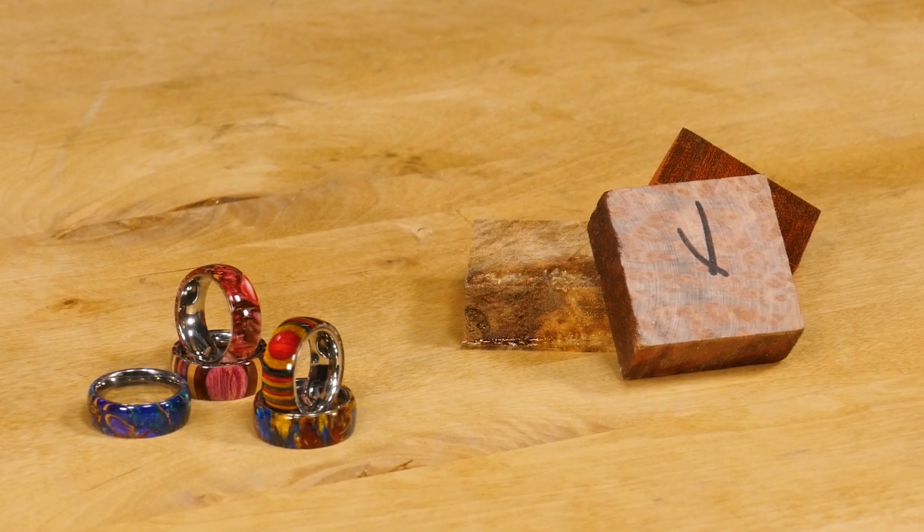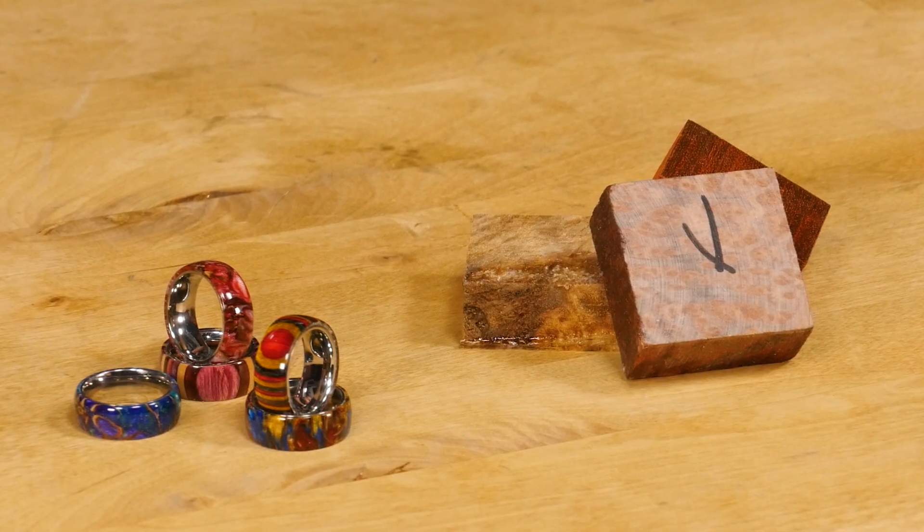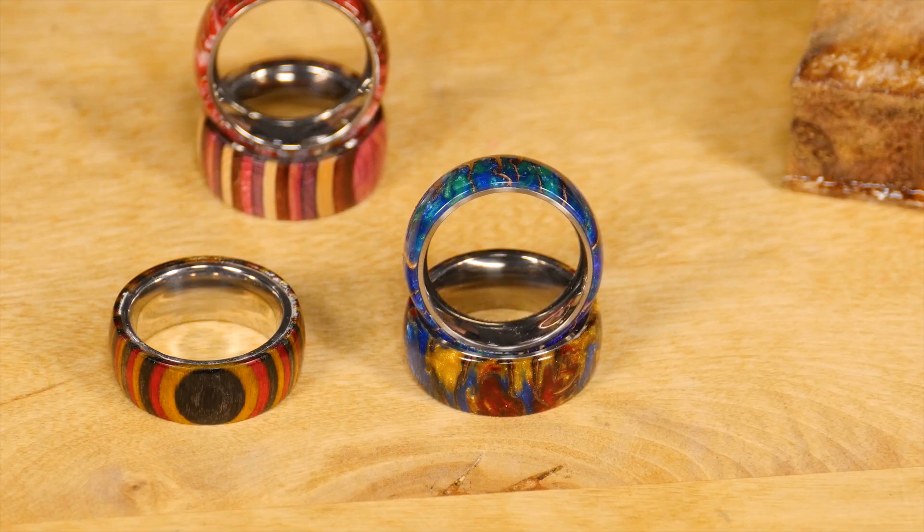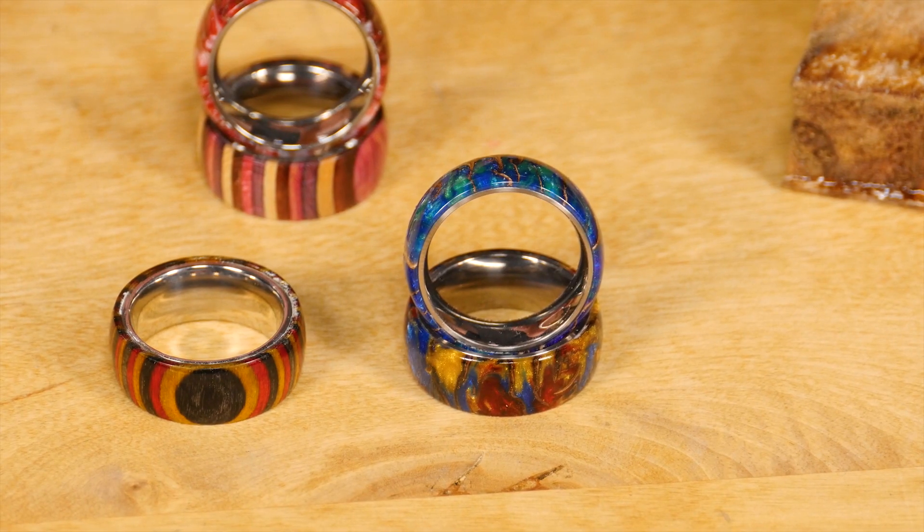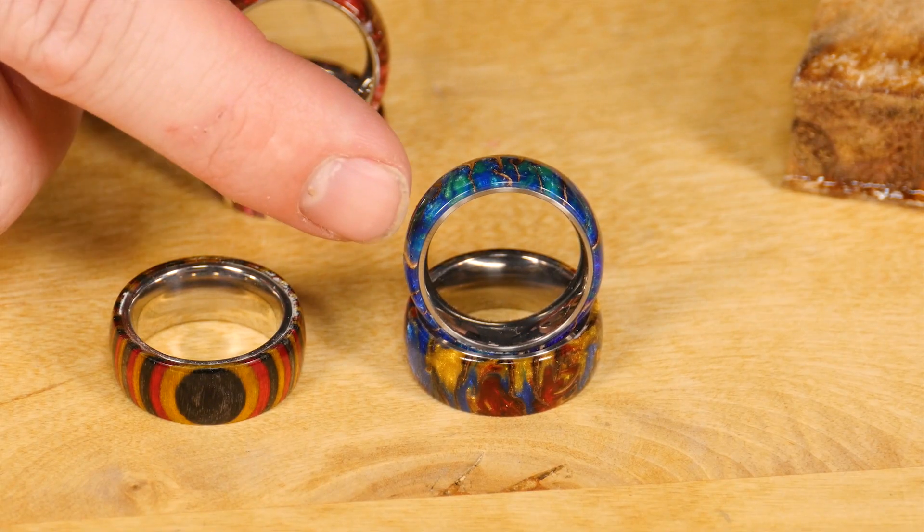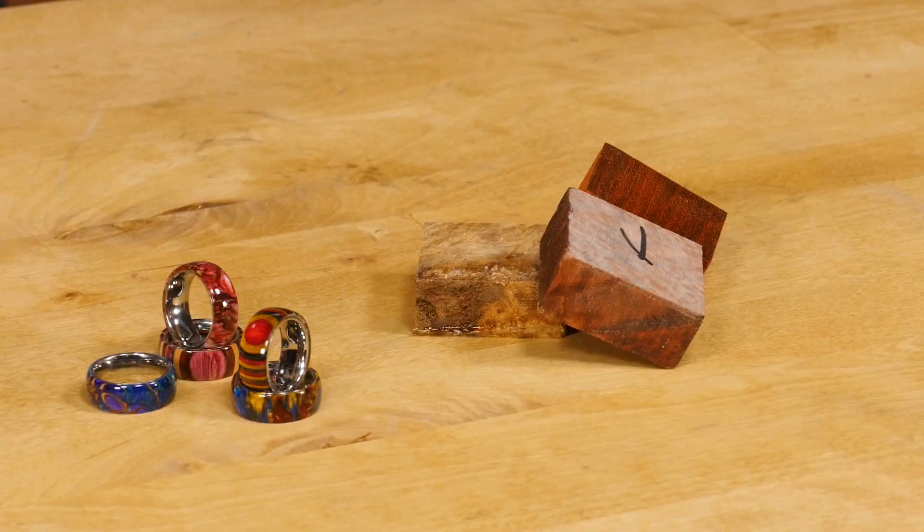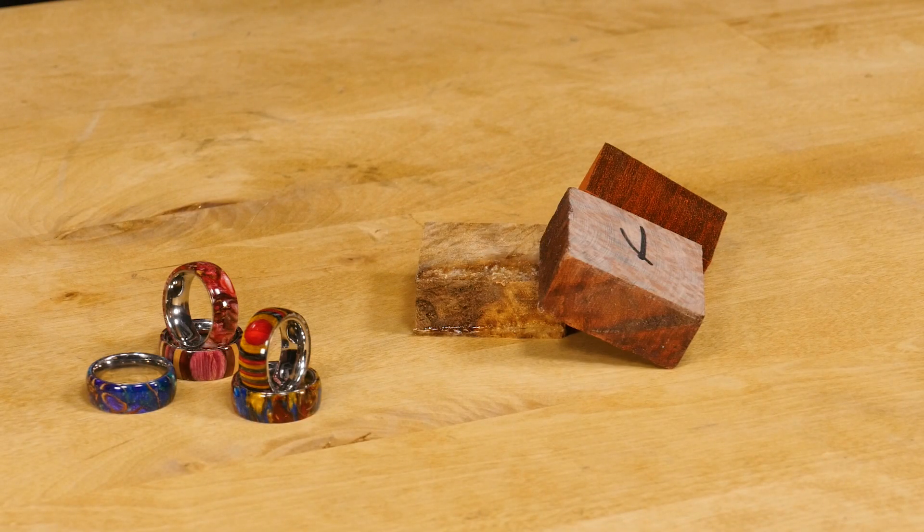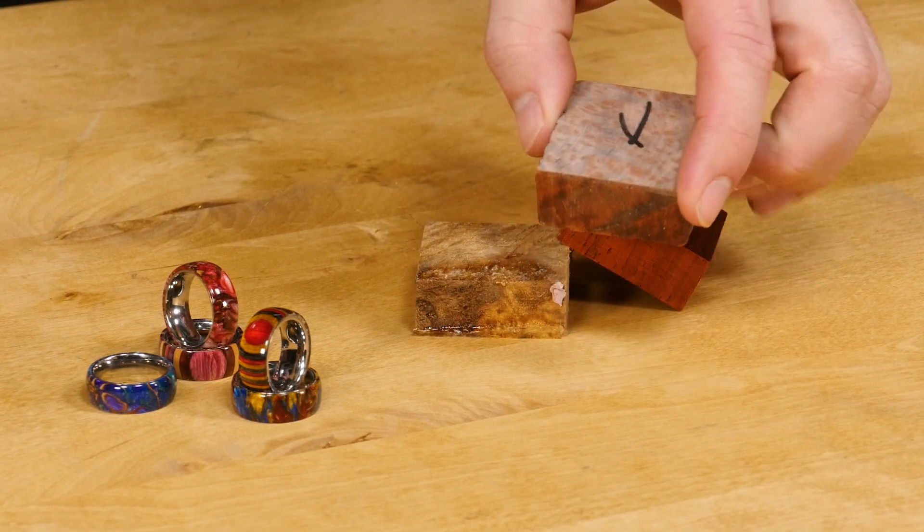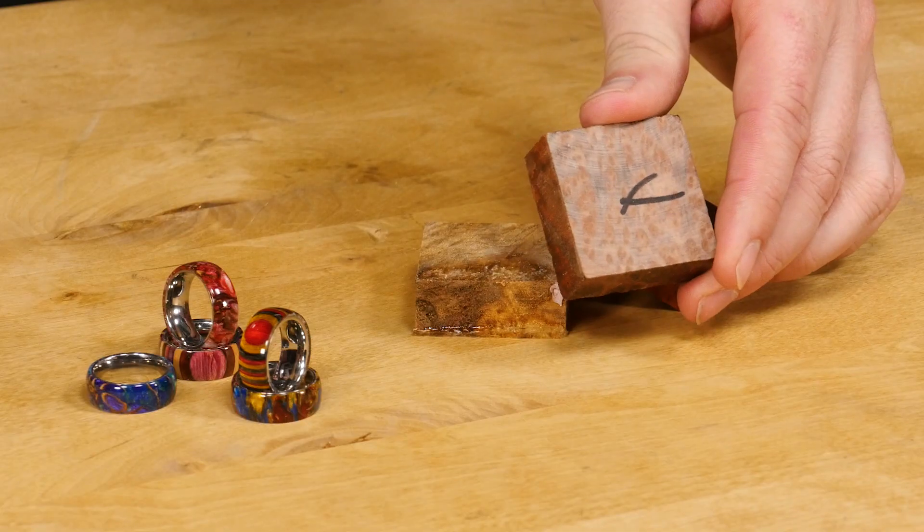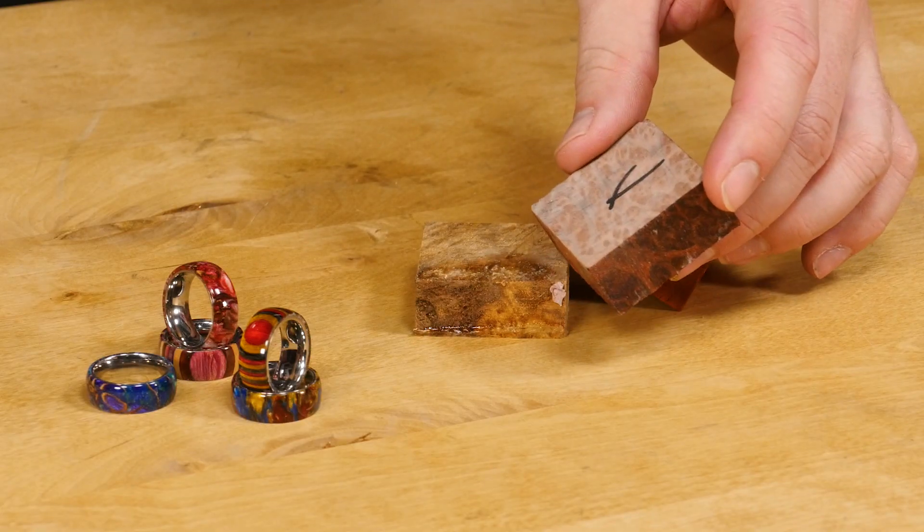Let's get started by choosing a blank that is one-sixteenth wider than our ring core. Blank selection on a ring is very important. Once turned, there is very little material left and any wood movement can result in a crack. Select a very dry, or better yet stabilized wood, a dense exotic, or an acrylic blank. I'll be turning my ring out of a stabilized piece of redwood burl.